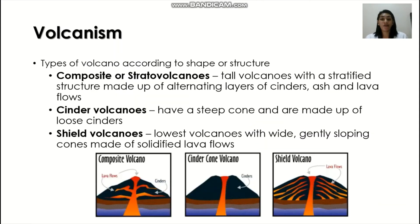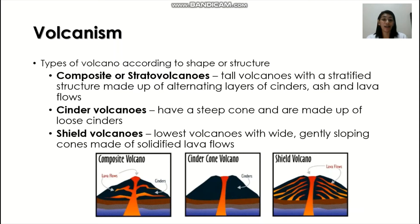Types of volcanoes according to shape or structure: we have the composite or stratovolcanoes, which are tall volcanoes with a stratified structure made up of alternating layers of cinders, ash, and lava flows. Then we have cinder volcanoes, which have a steep cone and are made up of loose cinders. And shield volcanoes, which are the lowest volcanoes with wide, gently sloping cones made of solidified lava flows.